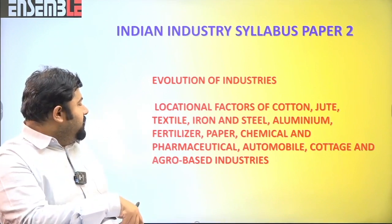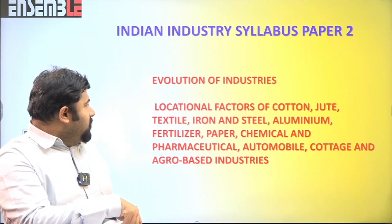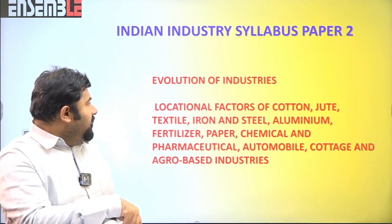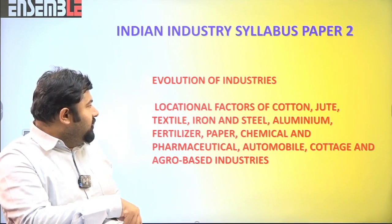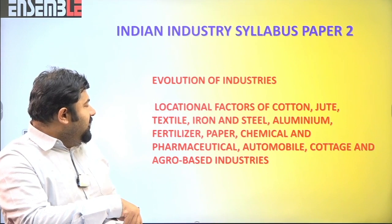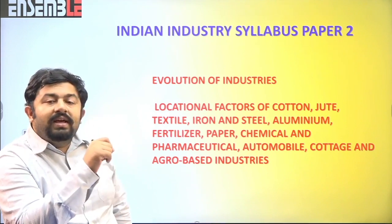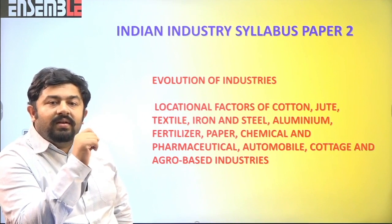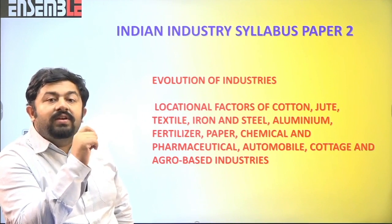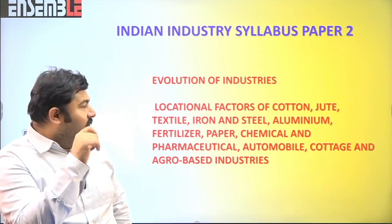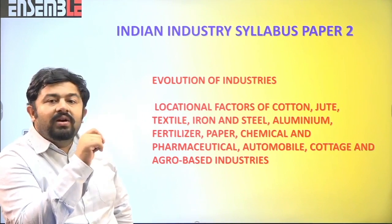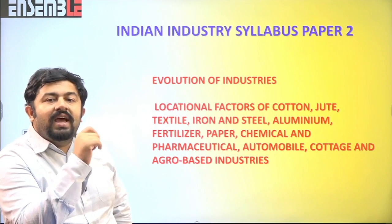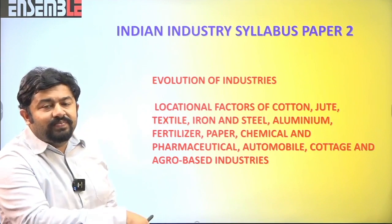The second topic covers location factors of cotton, jute, textile, iron and steel, aluminum, fertilizer, paper and chemical industry, pharmaceutical industry, automobile, cottage and agro-based industries.